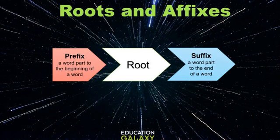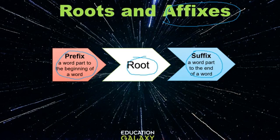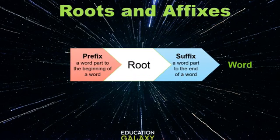A root word can have beginnings and endings added to it. If this is your root word, you can have a beginning which is a prefix, and a suffix that is attached to the end of a word. These beginnings and endings are called affixes. That's what affixes means — when you put them all together you have a word.